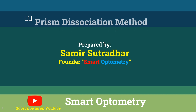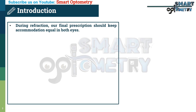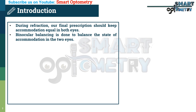Today I will discuss the prism dissociation method of binocular balancing. During refraction, our final prescription should keep accommodation equal in both eyes. Binocular balancing is done to balance the state of accommodation in the two eyes.